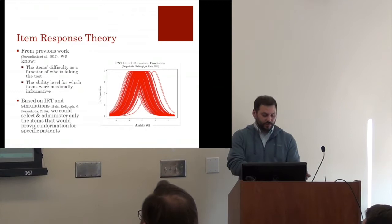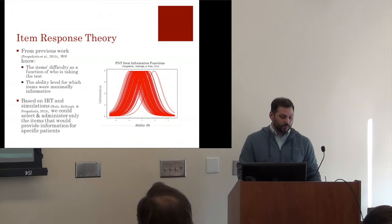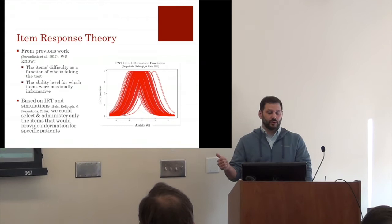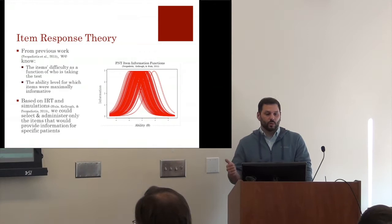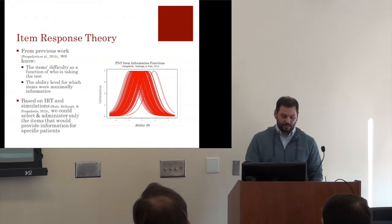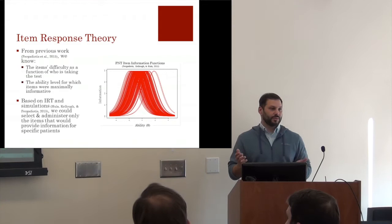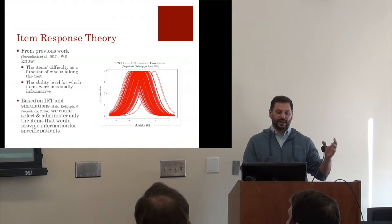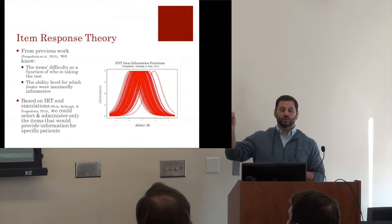Based on our 2015 calibration of the Philadelphia Naming Test, we knew the difficulty parameter of every item and therefore which ability region each item is maximally informative for. Guided by IRT and simulations run primarily by William Hula at the VA in Pittsburgh, we found it very feasible to create a computer adaptive test that selects only the maximally informative items from the PNT and ignores items that are too easy or too hard for the person being tested.